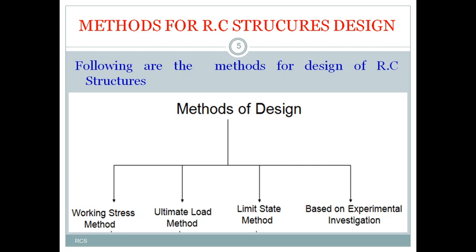The third method is the limit state method, developed to overcome the drawbacks of both the working stress method and the ultimate load method. This method was developed in 1955 but implemented in India in 1978, though not in a full-fledged way. It was completely implemented in India in 2000, with the code IS 456-2000 being the standard for limit state design of RC structures.